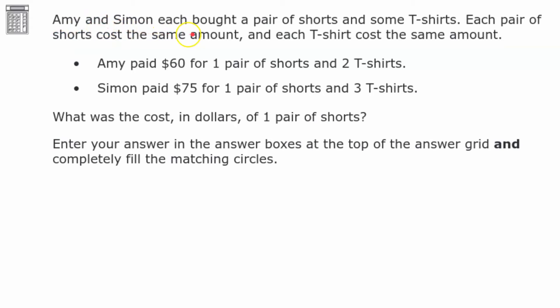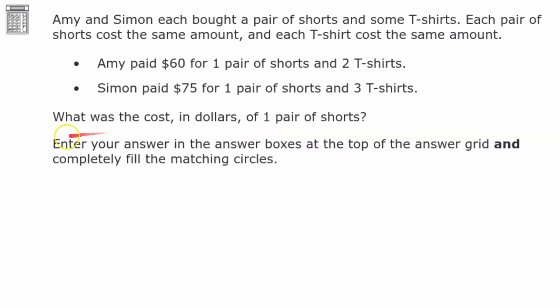Amy and Simon each bought a pair of shorts and some t-shirts. Each pair of shorts cost the same amount and each t-shirt cost the same amount. Amy paid $60 for one pair of shorts and two t-shirts. Simon paid $75 for one pair of shorts and three t-shirts. What was the cost in dollars of one pair of shorts? Go ahead and solve, then come back when you're ready.